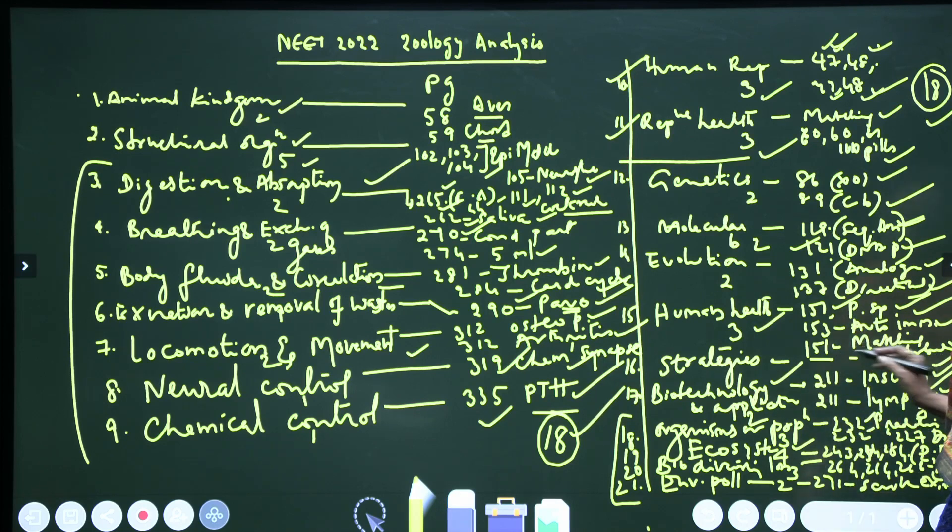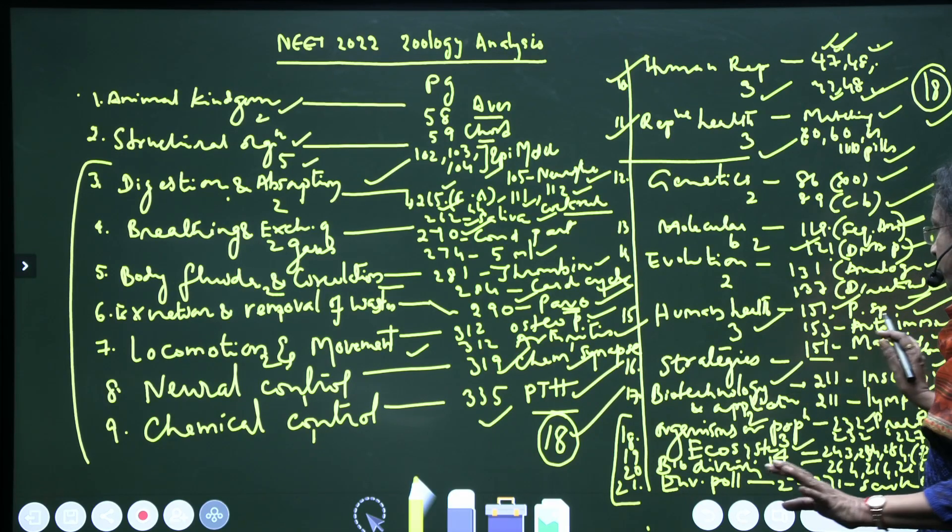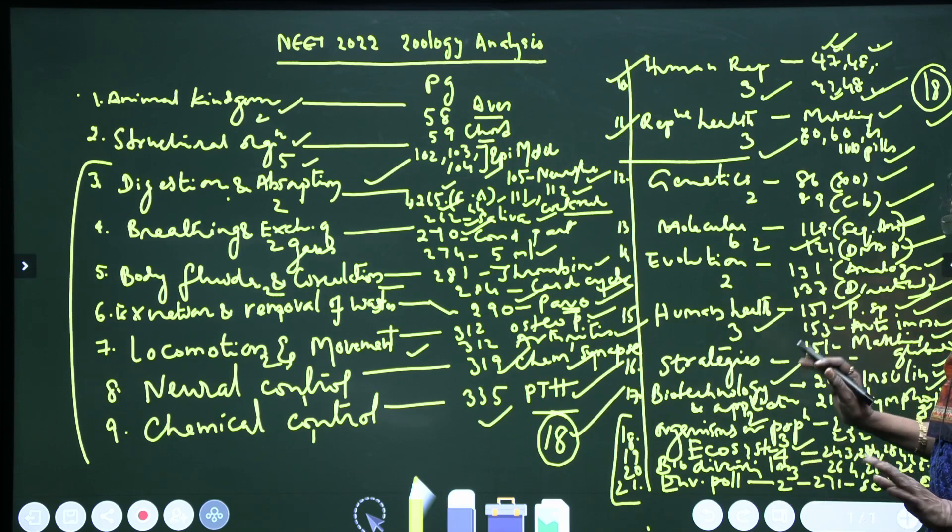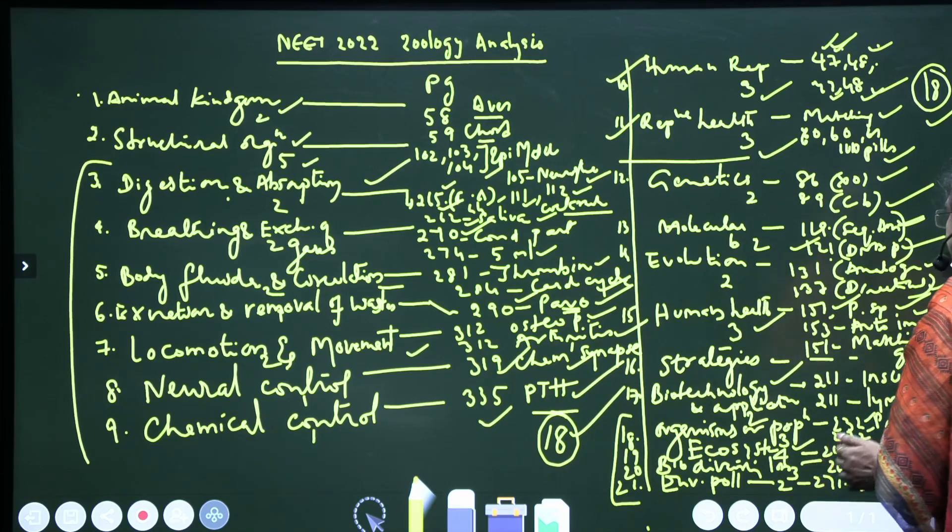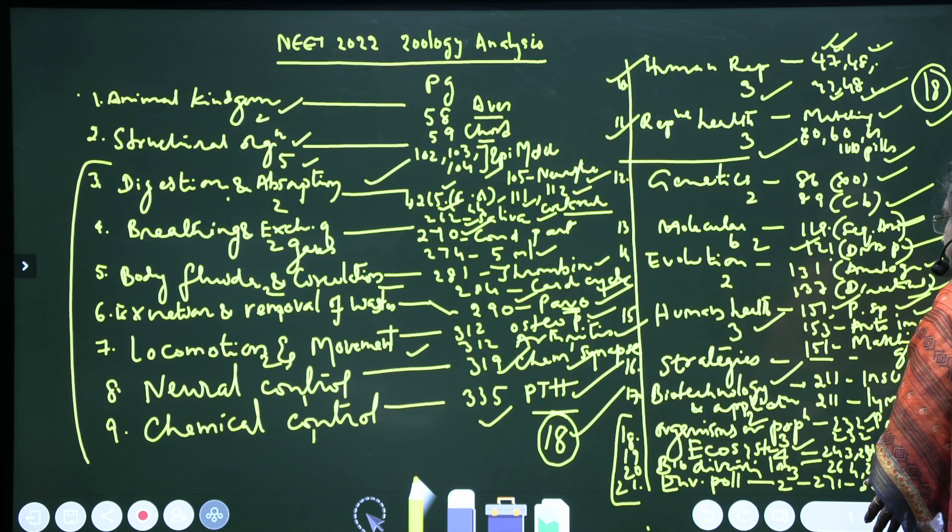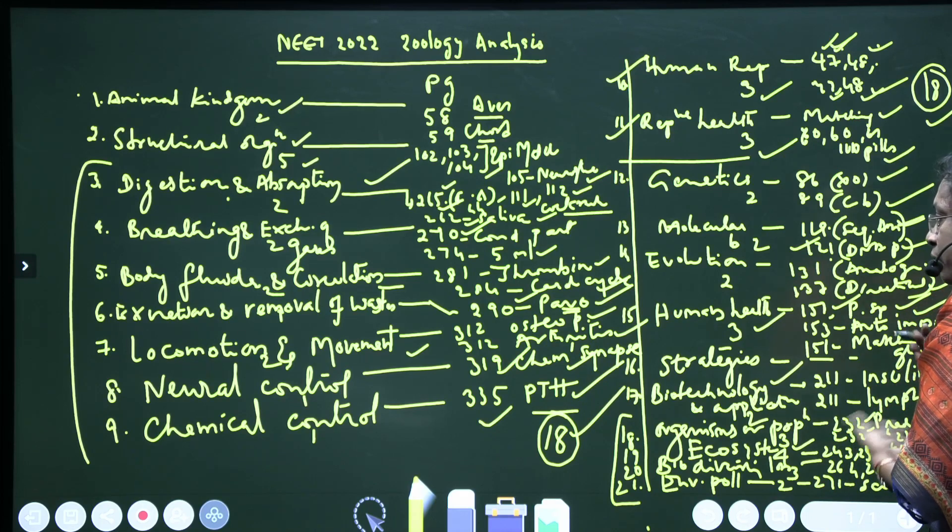Now coming to Strategies, there is no question this year, but it is very important: inbreeding, inbreeding depression, homozygosity, and outcross. And next, MOET - that is very important, but this year it is skipped.